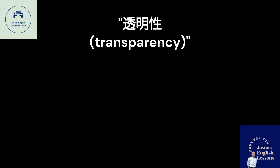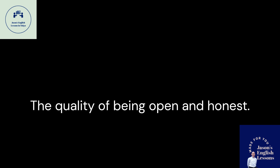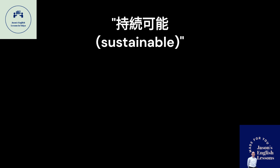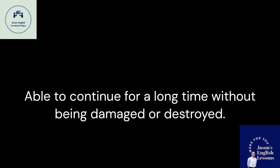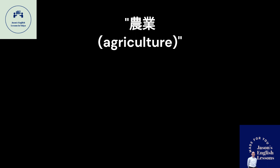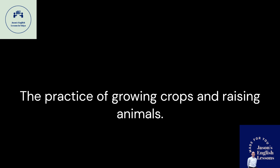Transparency: The quality of being open and honest. Sustainable: Able to continue for a long time without being damaged or destroyed. Agriculture: The practice of growing crops and raising animals.